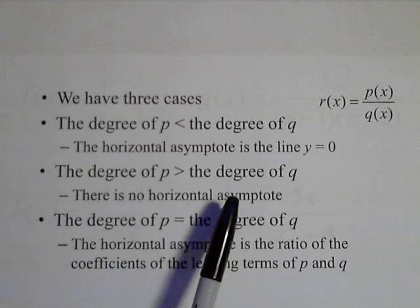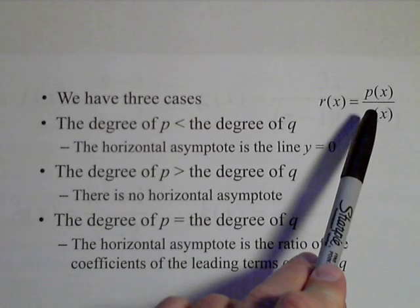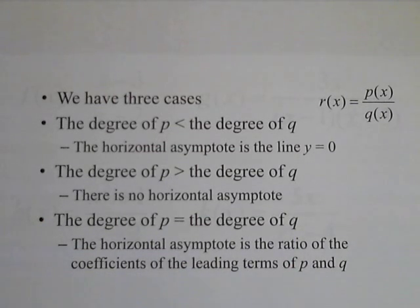If the degree is larger in the numerator, so now we have a fraction that has a really big numerator, there's not going to be any horizontal asymptote. The numerator is growing faster than the denominator.